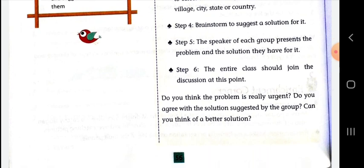Step 4: Brainstorm to suggest a solution for it. Step 5: The speaker of each group presents the problems and the solutions they have. Step 6: The entire class should join the discussion at this point. These are the important steps and groups for discussing the problems of the entire country.